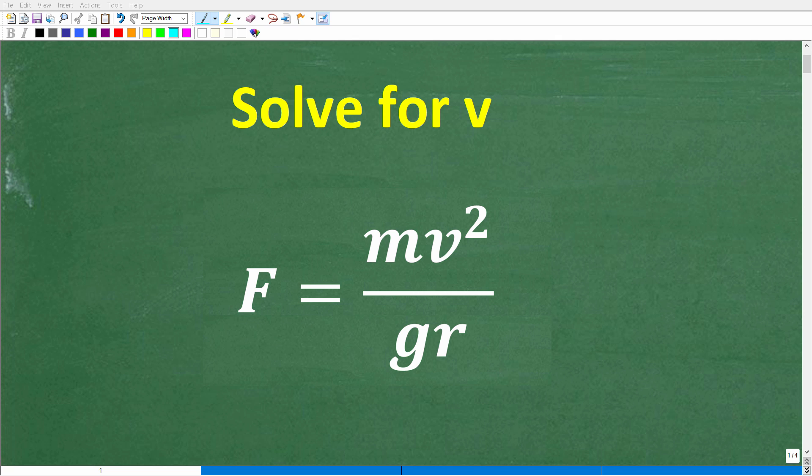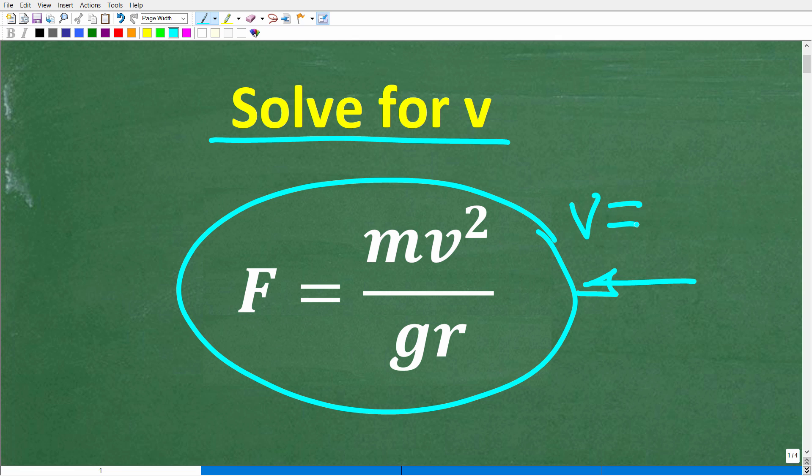Okay, so one of the most important skills that you need in math and in science is the ability to work with formulas. And what we're looking at right here is a formula from physics. So the formula is F is equal to m times v squared over g times r. And the question is, we want to solve for v or rewrite this equation in terms of v.